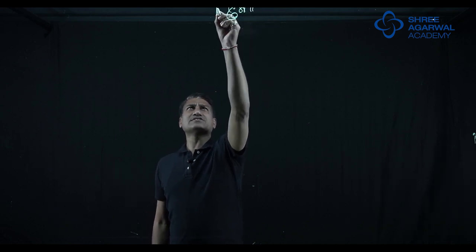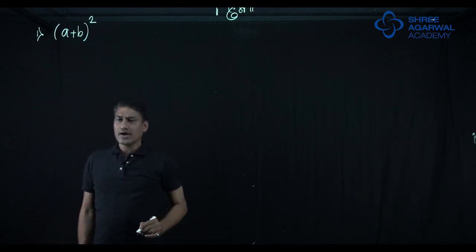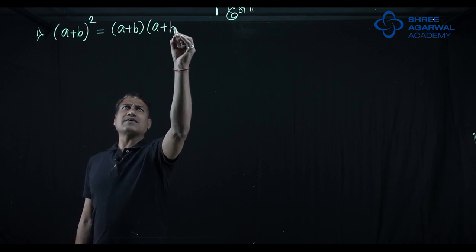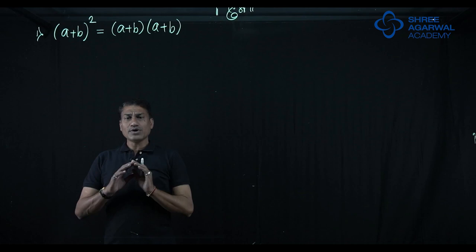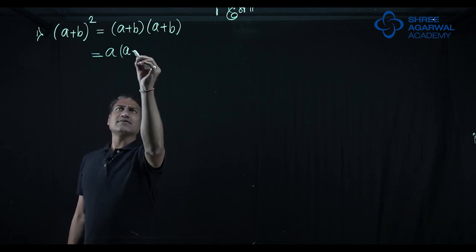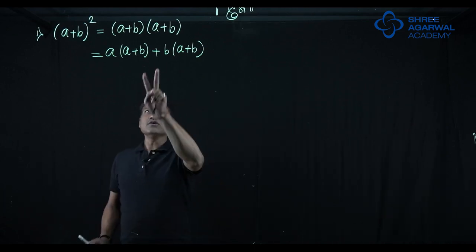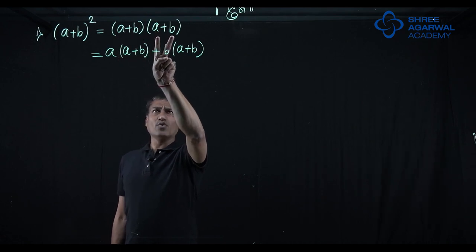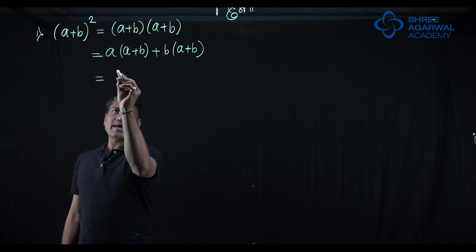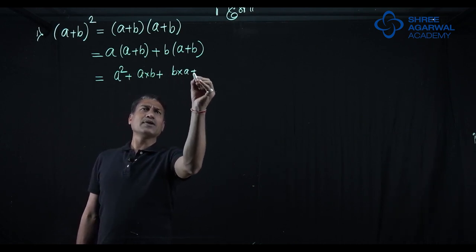The two very important expansions are like this. If we have a bracket a plus b and we square it, a plus b bracket square means it is actually a plus b into a plus b. This bracket is taken two times. So if you go according to the complete expansion method, this would be a, this a into this bracket plus this b into this bracket again. So this a plus b is distributed over this. It is called distributive property.